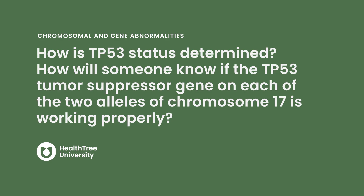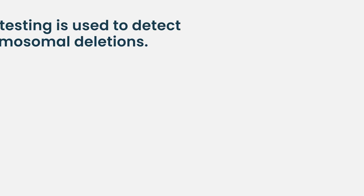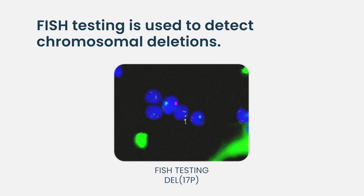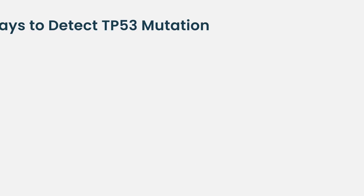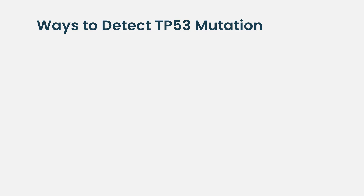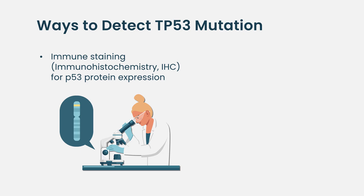How is TP53 status determined? How will someone know if the TP53 tumor suppressor gene on each of the two alleles of chromosome 17 is working properly? It's based on a bone marrow sample. The cytogenetic FISH test picks up chromosome abnormalities and detects the 17p deletion. P53 status is also available by immunostaining of the bone marrow biopsy, where pathologists use a stain that reflects P53 expression — looking at the DNA level as opposed to the chromosome level.